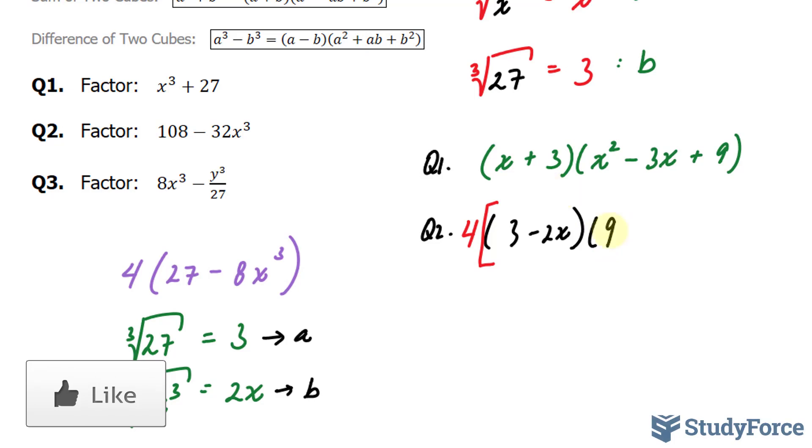a to the power of 2, it's like saying 9, plus a times b, so 6x. And lastly, b to the power of 2, that's like saying 2x to the power of 2, which is 4x squared. Close the square bracket, and this is the final answer for question 2.